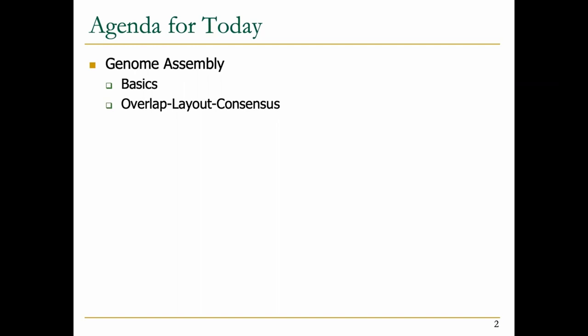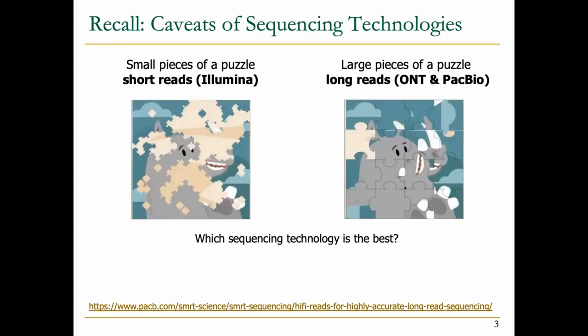Today the agenda is to cover the steps in genome assembly, starting with the basics, and then I'll talk about a common approach called overlap layout consensus. Before we start, remember the caveats we previously discussed. Some sequencing technologies like Illumina produce very short reads, while third generation sequencing technologies produce long reads. Our challenge is essentially to solve a puzzle — either by looking at an already solved puzzle, which is the reference genome, or figuring it out yourself, which is genome assembly.